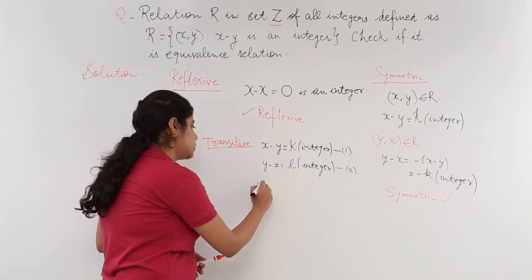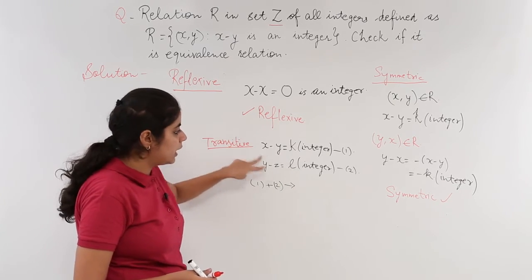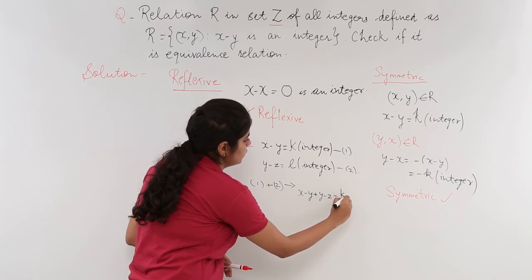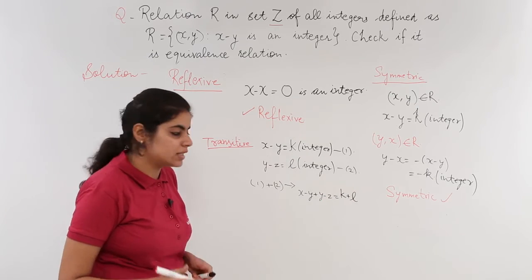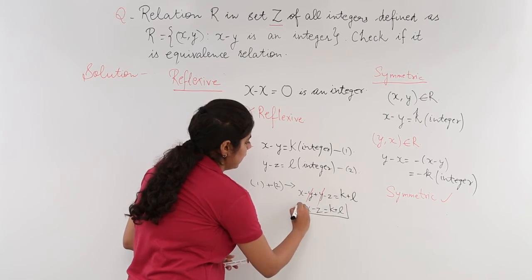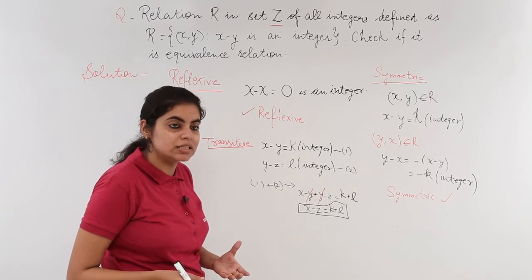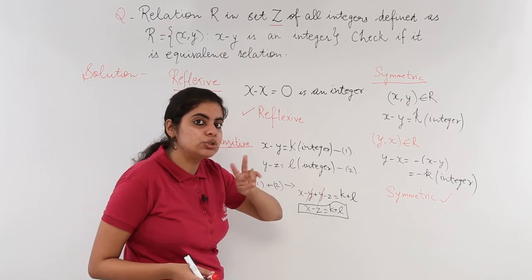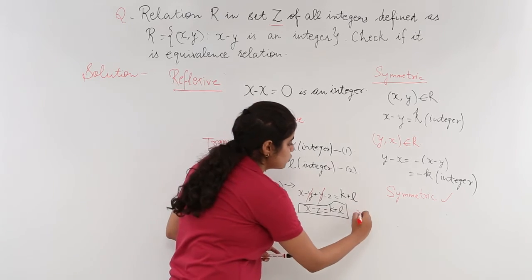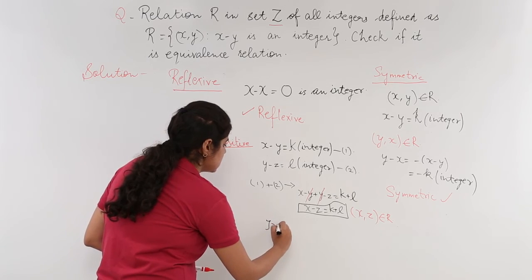Adding equations one and two: X minus Y plus Y minus Z equals K plus L. The minus Y and plus Y cancel, giving X minus Z equals K plus L. This tells us X and Z are also related. Since K and L are both integers, their sum K plus L is also an integer, so X comma Z belongs to R. Hence the relation is transitive.